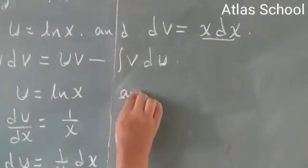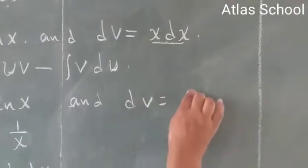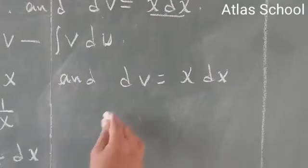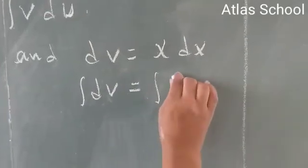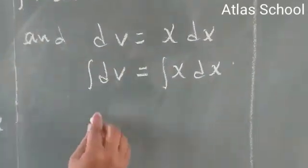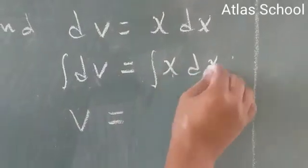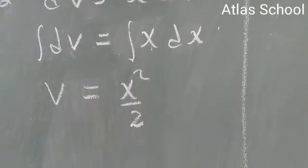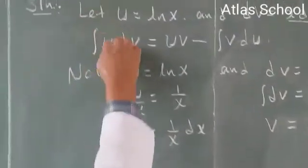And already we have given dv is equal to x dx. Integrate both sides of the expression which becomes the integral of dv is equal to the integral of x dx. The integral of dv becomes v. The integral of x dx becomes x squared over 2. Now let's back to this expression.